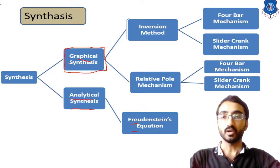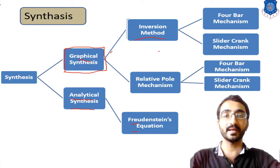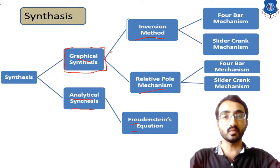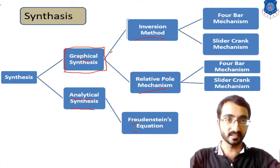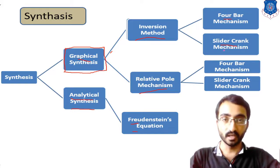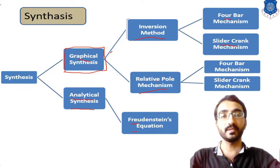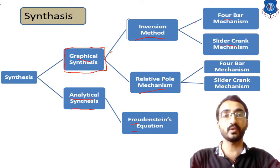Graphical synthesis is divided into mainly two types: inversion method and relative pole method. With the help of inversion and relative pole method, we mainly synthesize two types of mechanisms — the four-bar mechanism and the slider-crank mechanism. Both inversion and relative pole methods can be used to design four-bar and slider-crank, so we can further divide inversion into inversion of four-bar and inversion of slider-crank.